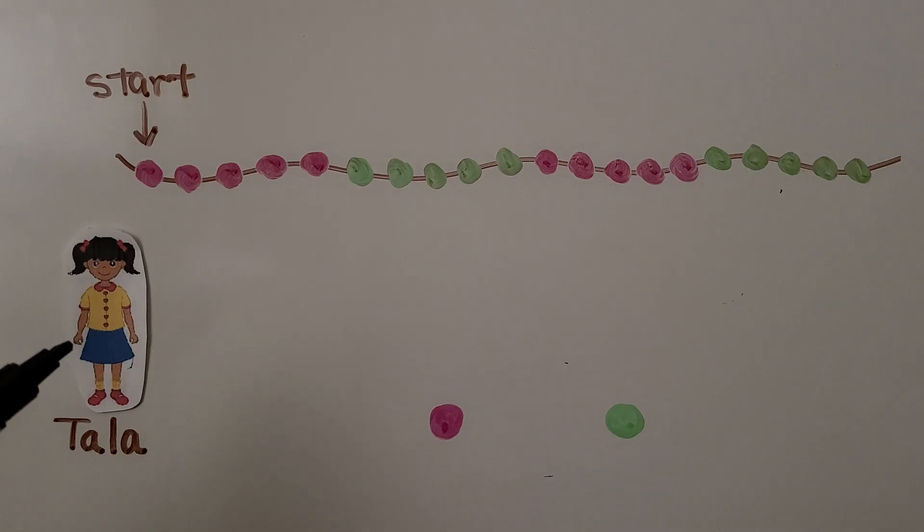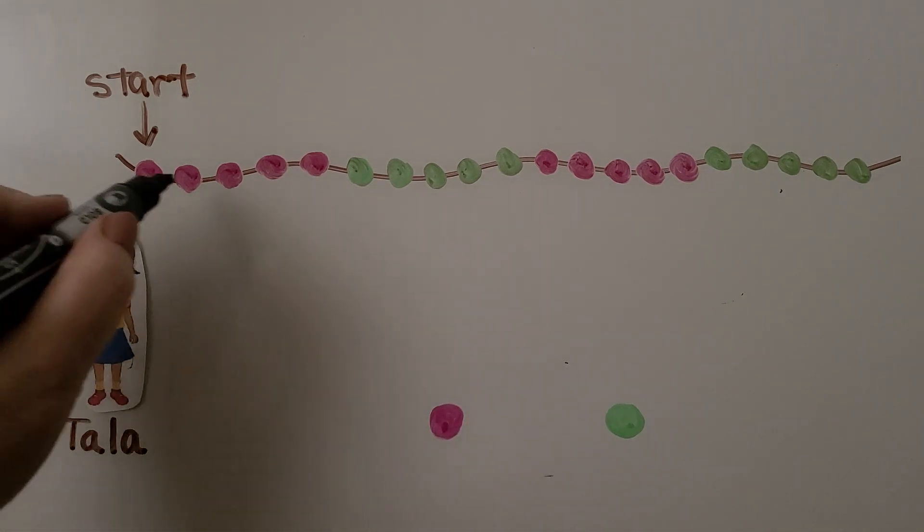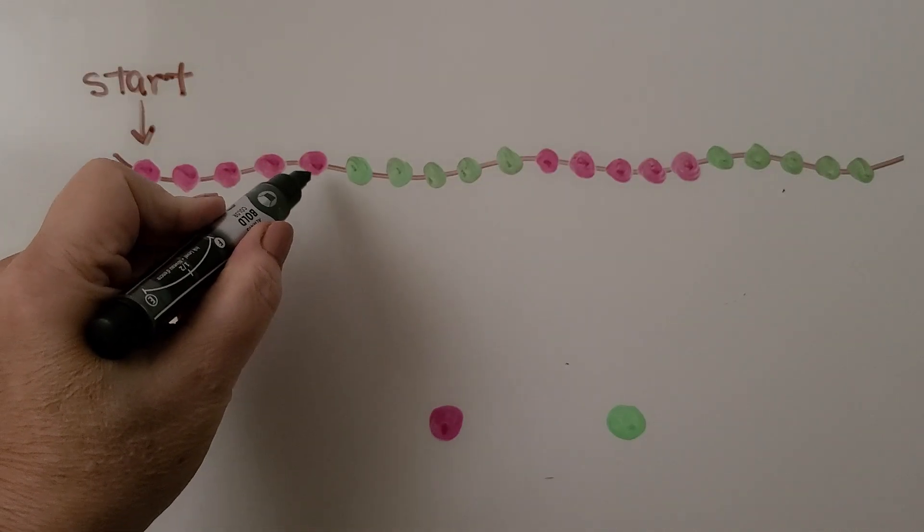Here's Tala. Tala made a necklace with 17 beads. Starting with the bead, the pink one on the left right here, we need to circle 17 beads that Tala used. We have 1, 2, 3, 4, 5,